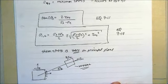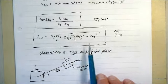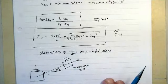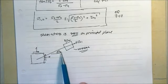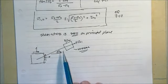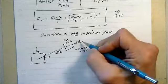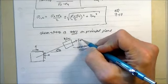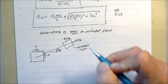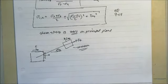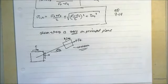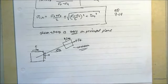On the principal angle, as it is defined, there is no shear stress. So if we find the principal angle, we get sigma-1 and sigma-2 — those are the principal stresses — and there is no shear on those faces.